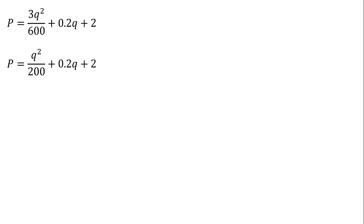And then this 3 divided by 600 will simplify down to just 1 over 200. And then I'm going to multiply everything through by 200 to get rid of this denominator. And now moving this 200P over to the right-hand side, we have the following.